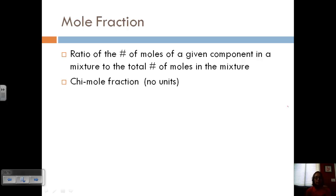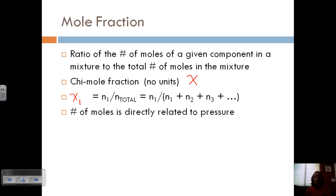And the symbol is chi. It has no units. It's like a fancy X. Okay, so we can calculate mole fraction for each gas. Chi sub 1 is equal to N1 over N total. And from what we talked about before with Dalton's partial pressure, the number of moles is directly related to pressure.